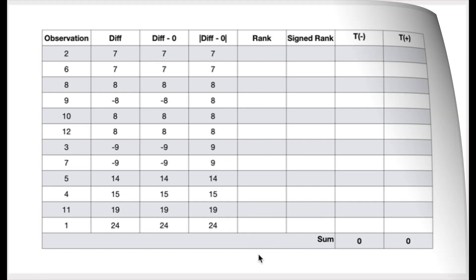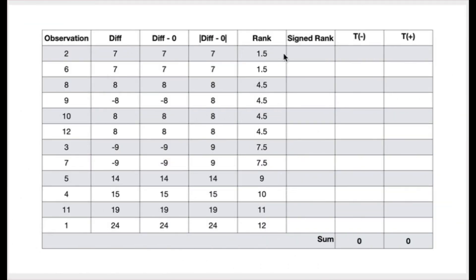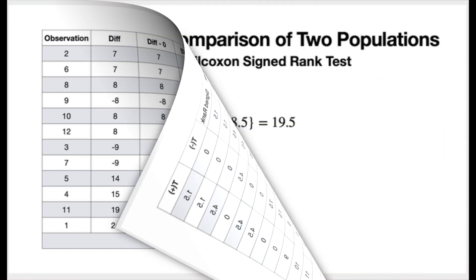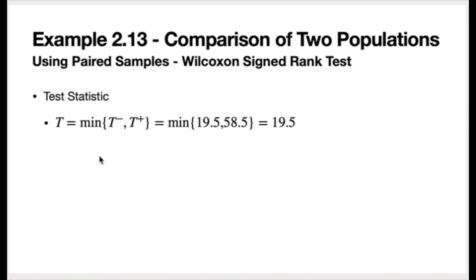After assigning signed ranks, I collect the absolute values of negative ranks in one column and positive ranks in another, then calculate column totals. This gives T-minus equal to 19.5 and T-plus equal to 58.5. The value of the test statistic — the minimum of T-minus and T-plus — is 19.5.